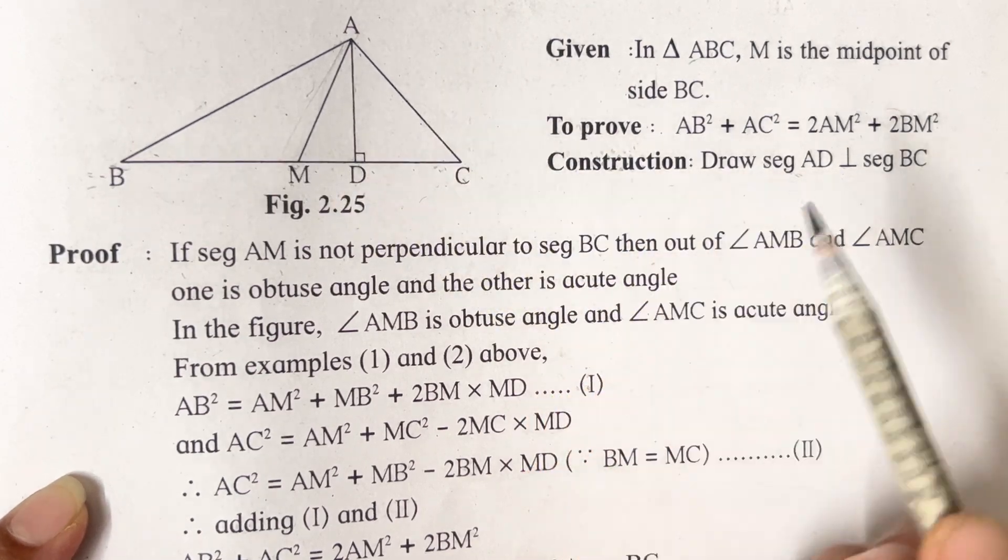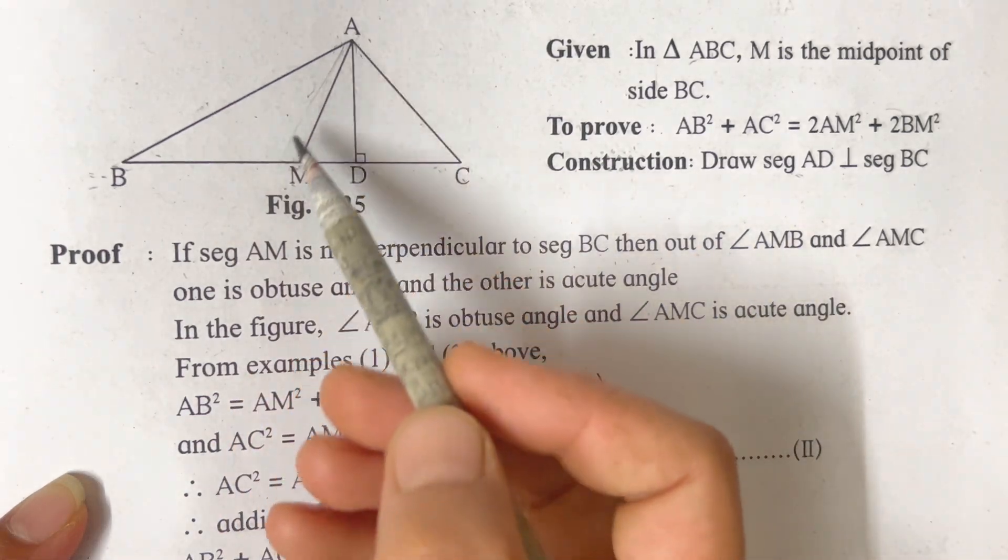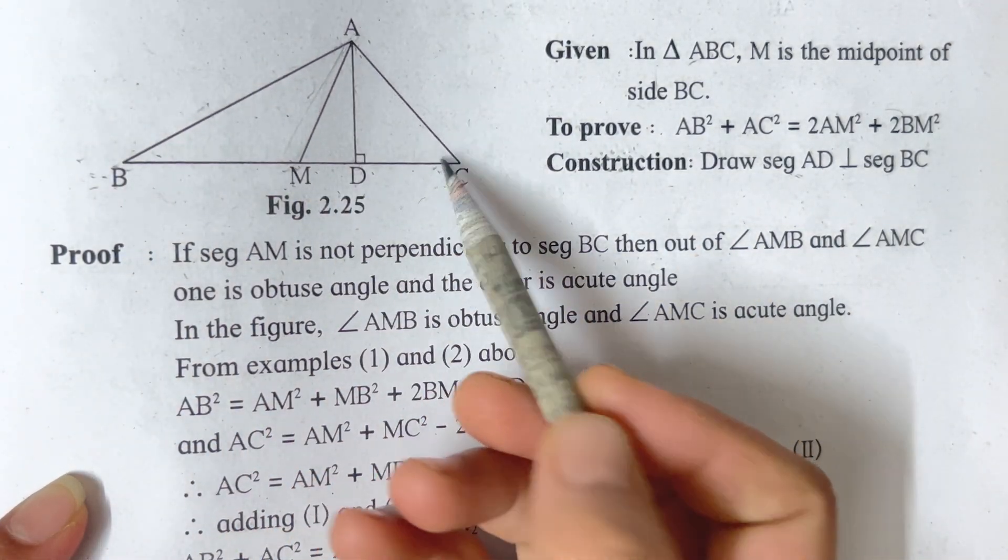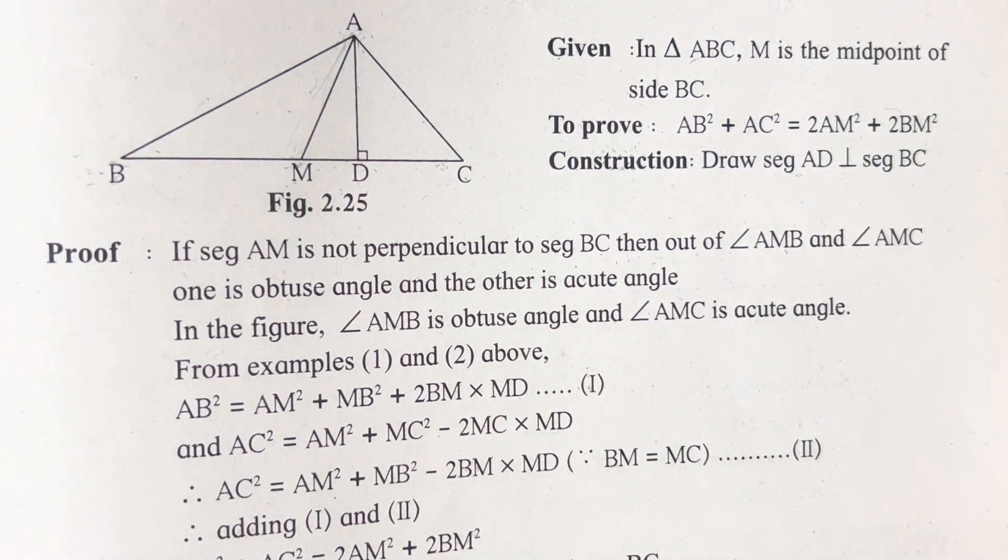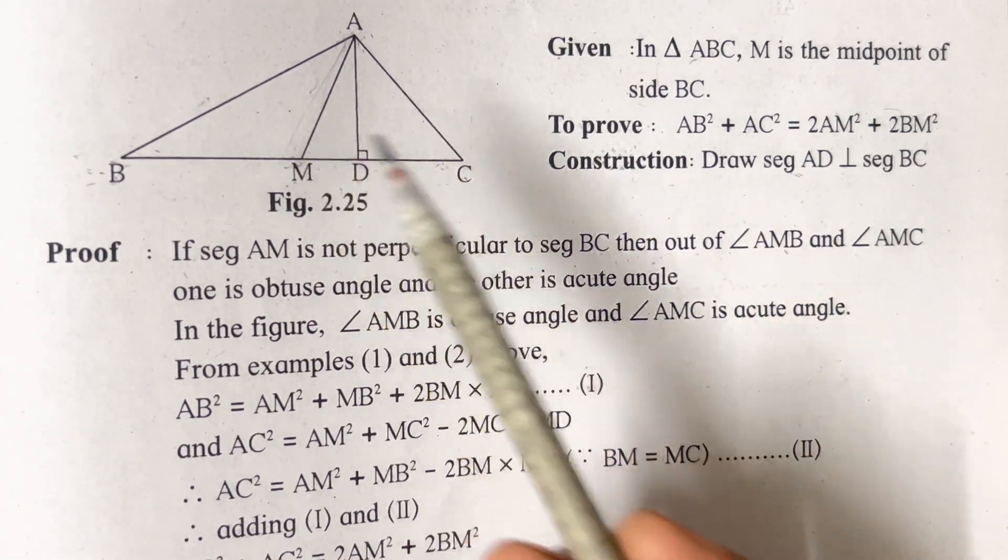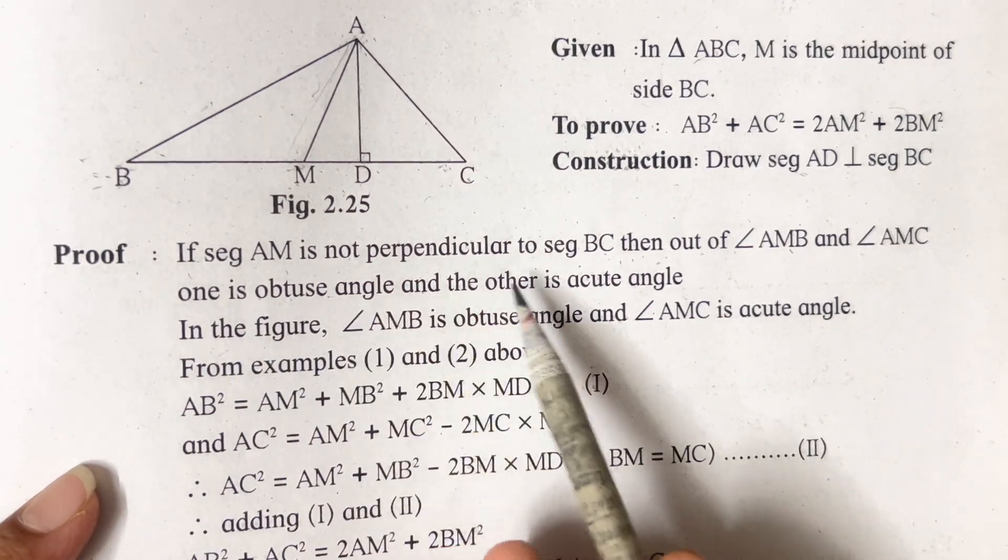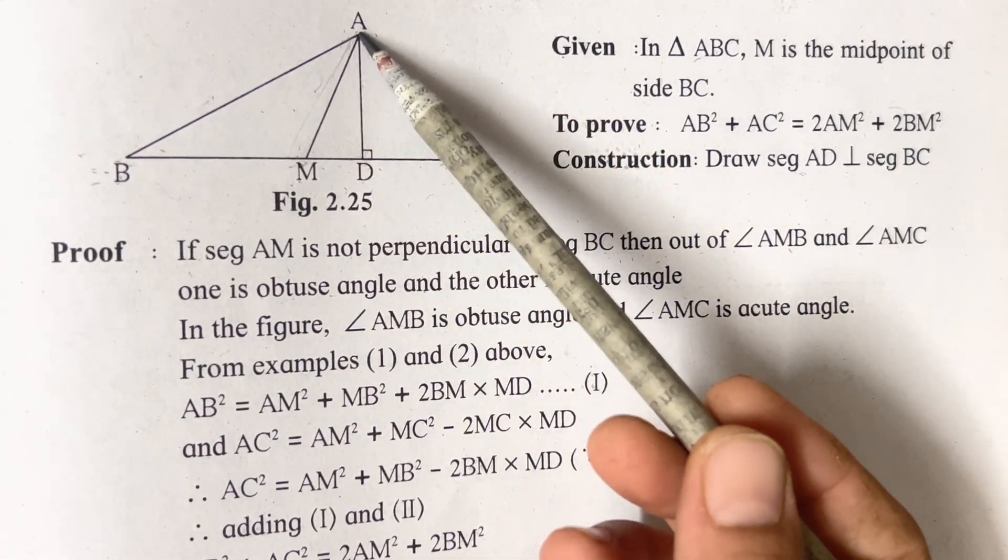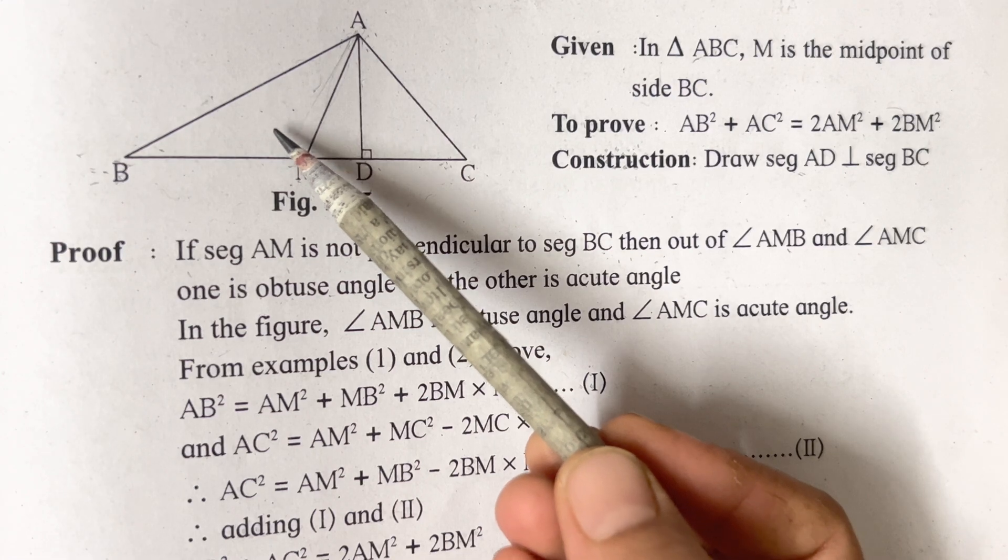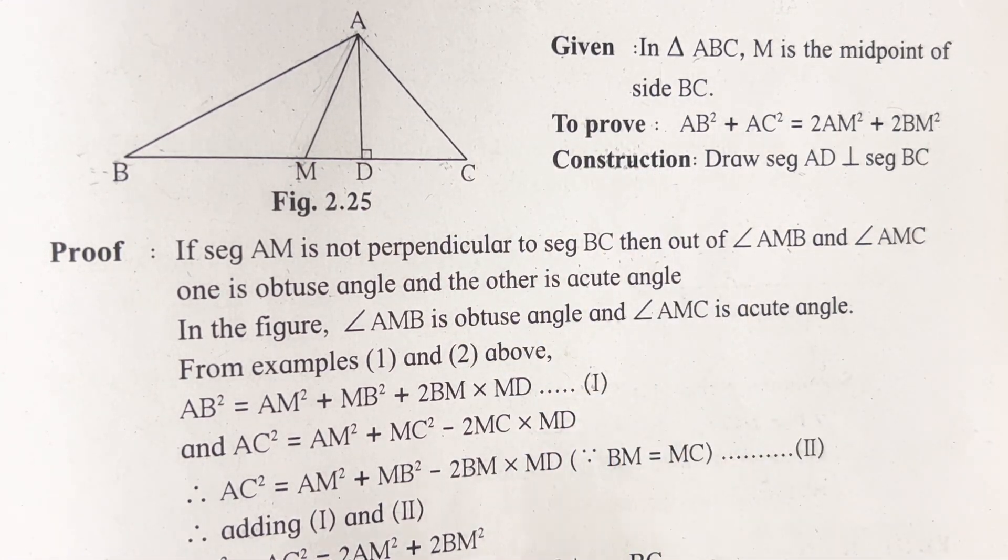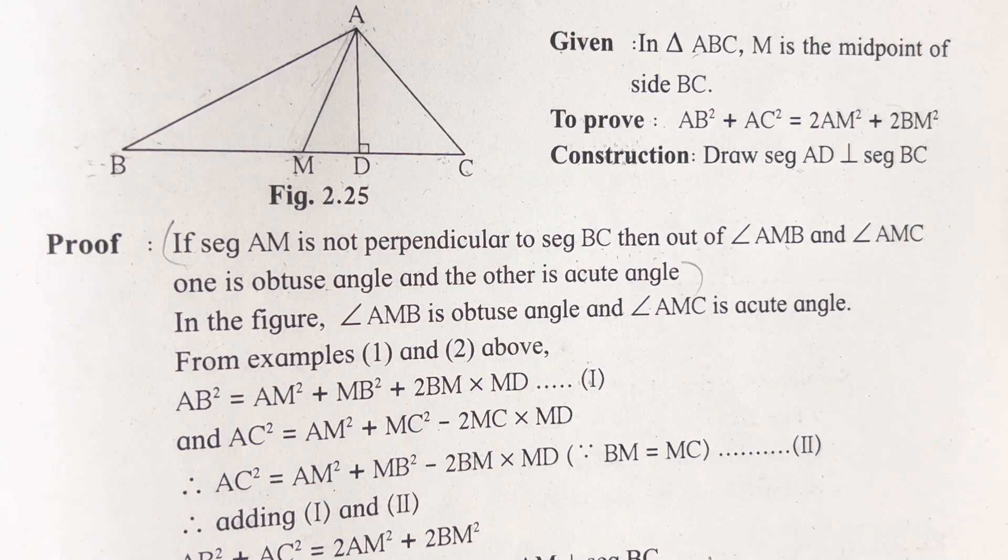Now you have to prove. If segment AM is not perpendicular to segment BC, then out of angle AMB and AMC two angles are formed. If AM is not perpendicular, obviously it is not perpendicular, it is the midpoint, whereas AD is perpendicular over here. So one is obtuse angle and the other is acute angle. Once a midpoint is drawn, you will get two types of angles - an obtuse angle and an acute angle. One will be more than 90 degrees, one will be less than 90 degrees.